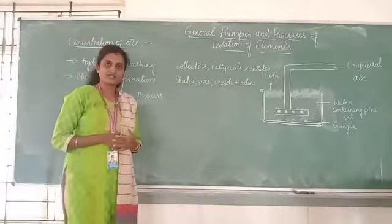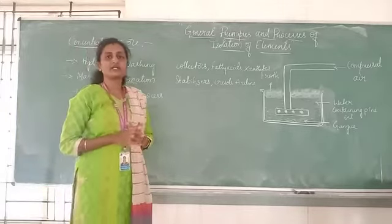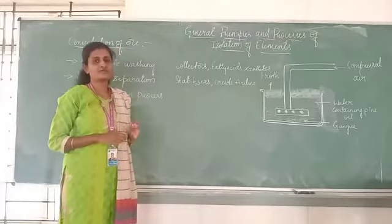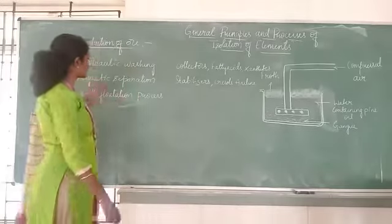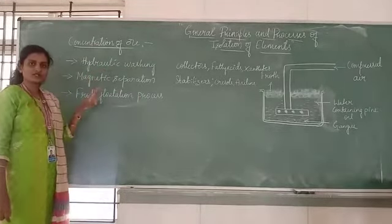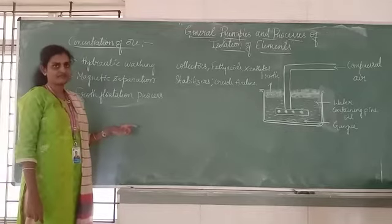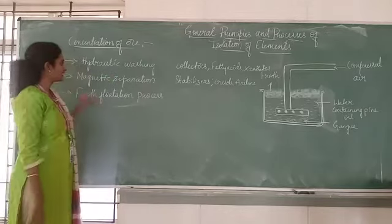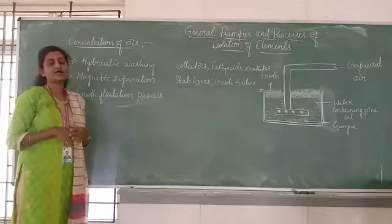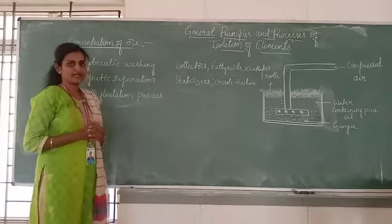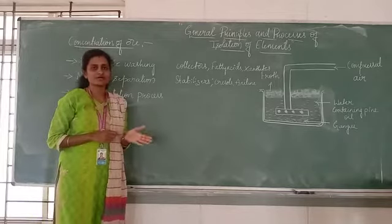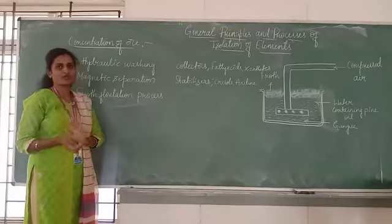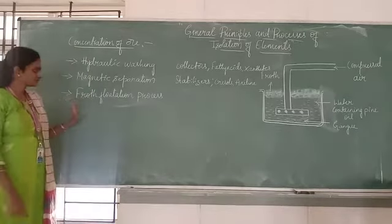Depending upon the physical properties and the environment in which the ore is available, we choose a particular concentrating method. In the last class we discussed two types: hydraulic washing, which uses water and is based on solubility and gravity — also called gravitational separation or lavigation — and magnetic separation, which is based on magnetic properties, where one of the ore or gang particle must be magnetic and the other non-magnetic.